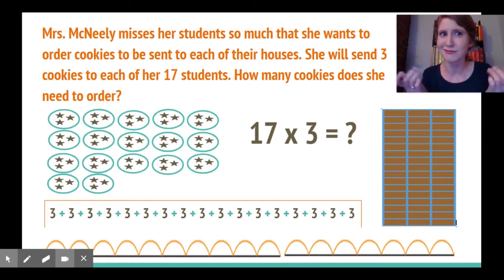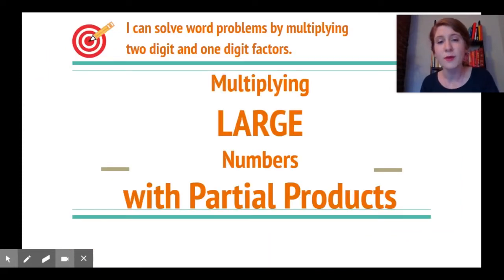But I know that multiplication is a fast way to add up equal groups, so isn't there a faster way? There sure is. The first way I want to show you is called multiplying with partial products, or I like to call it the box method because I use a box to make it simple and easy.